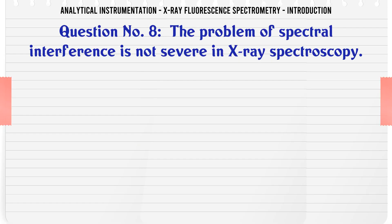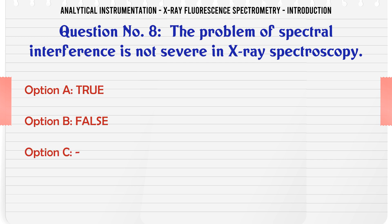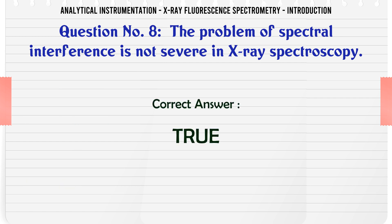The problem of spectral interference is not severe in X-ray spectroscopy. True or False? The correct answer is: True.